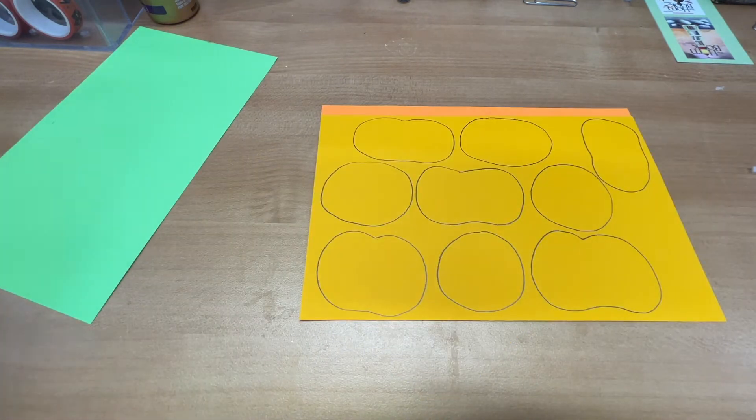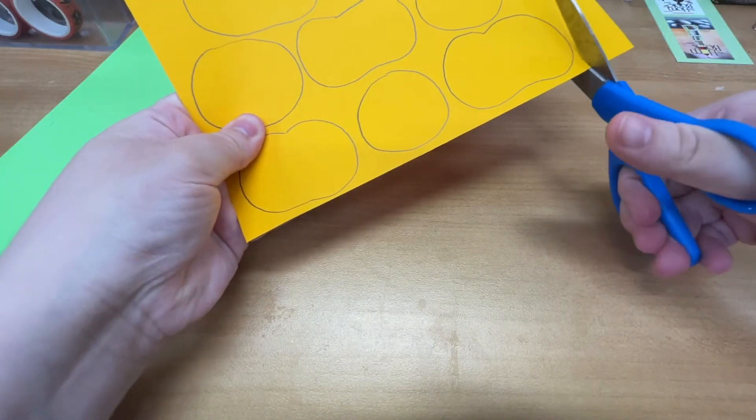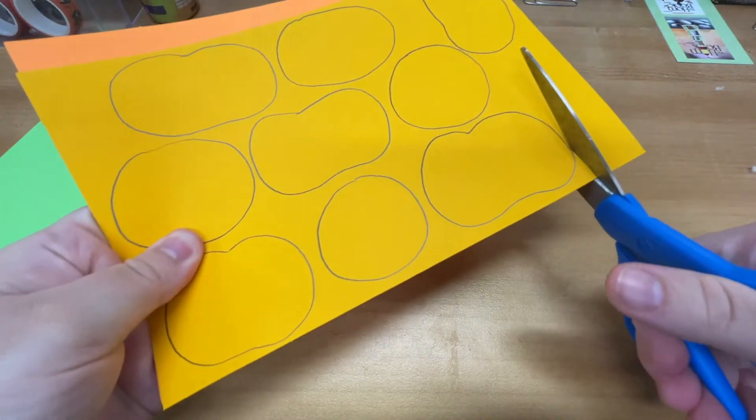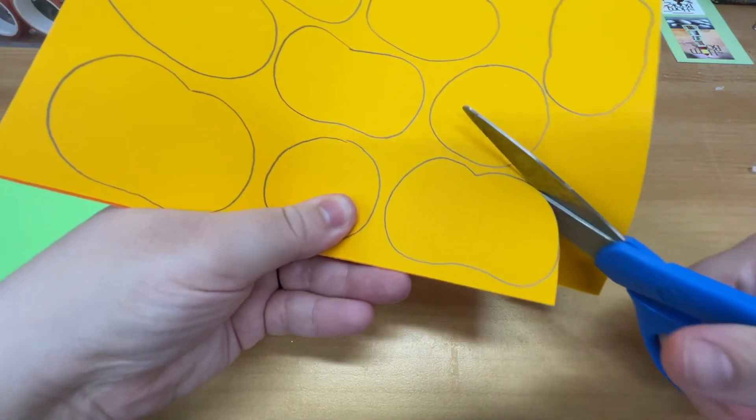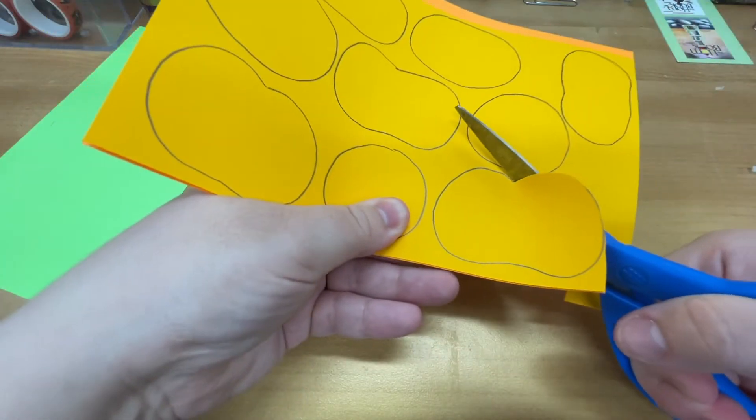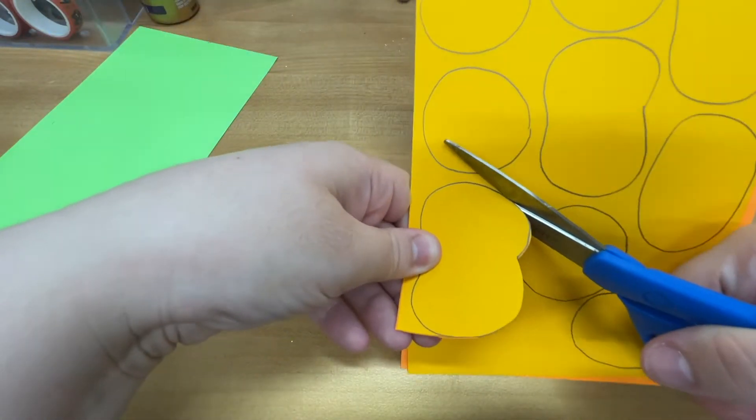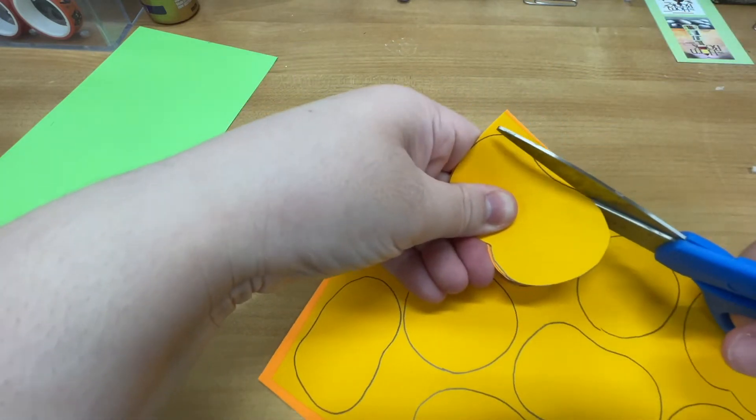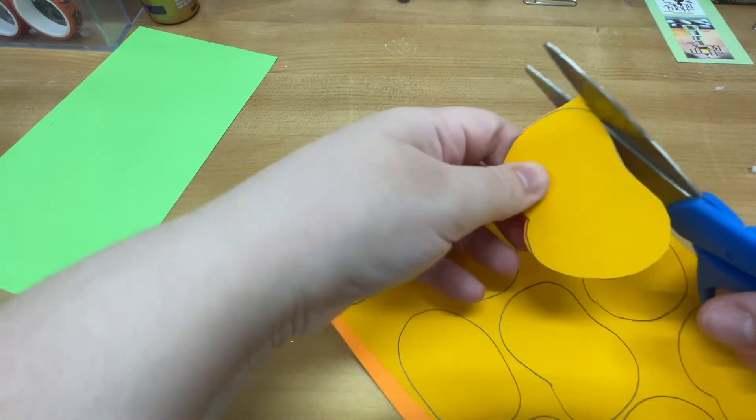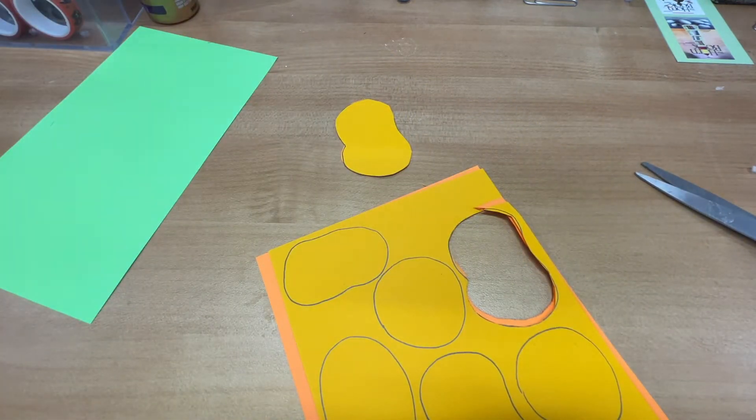Now that I have my pumpkins, I'm going to cut them out. I like to keep my paper stacked and that's just so when I cut them, I get two pumpkins instead of having to do them one at a time, but you don't have to do that at all. It's really up to you. There's no right or wrong way of doing it. I'm just going to cut off camera and then I'll check back in when I have all my pumpkins done.